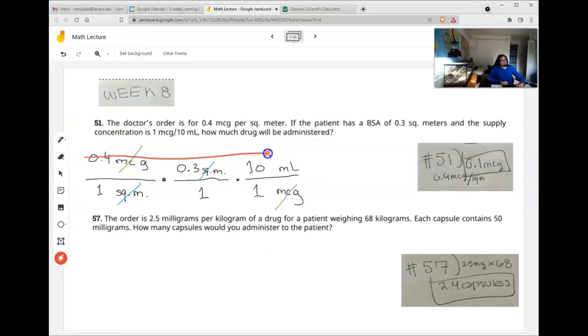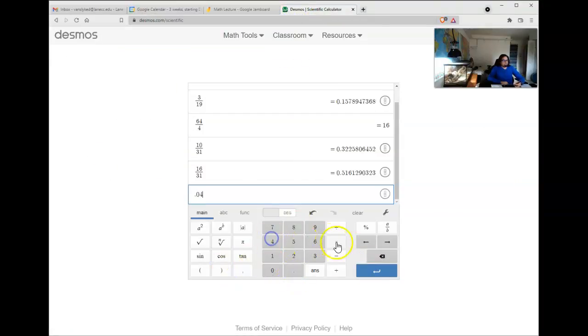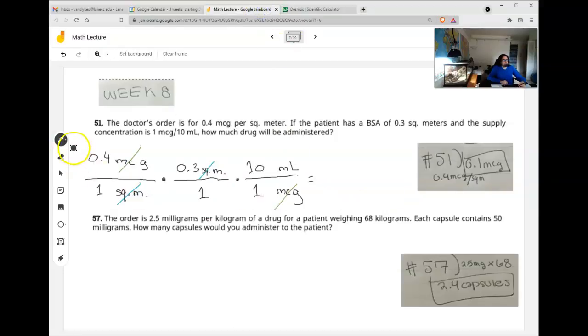Just like before, we are going to multiply across the top. 0.4 times 0.3 times 10. I did 0.04. And that gives me 1.2 on the top. And on the bottom, it's just 1 times 1 times 1, so that would become over 1, and I don't really need to write over 1, so I'm just done. If the bottom was something else, I would have to do top divided by bottom to turn this into a decimal instead of a fraction. We'll probably see that in the next one.